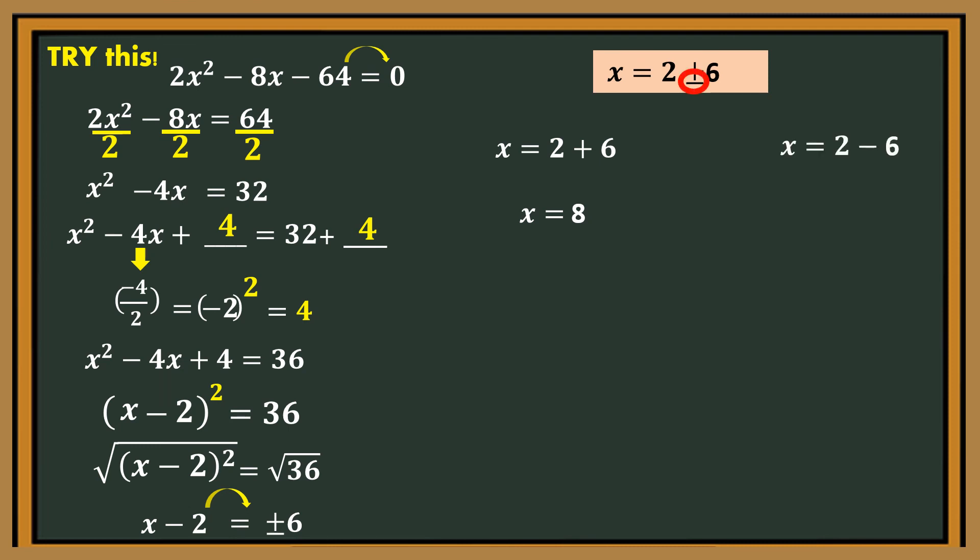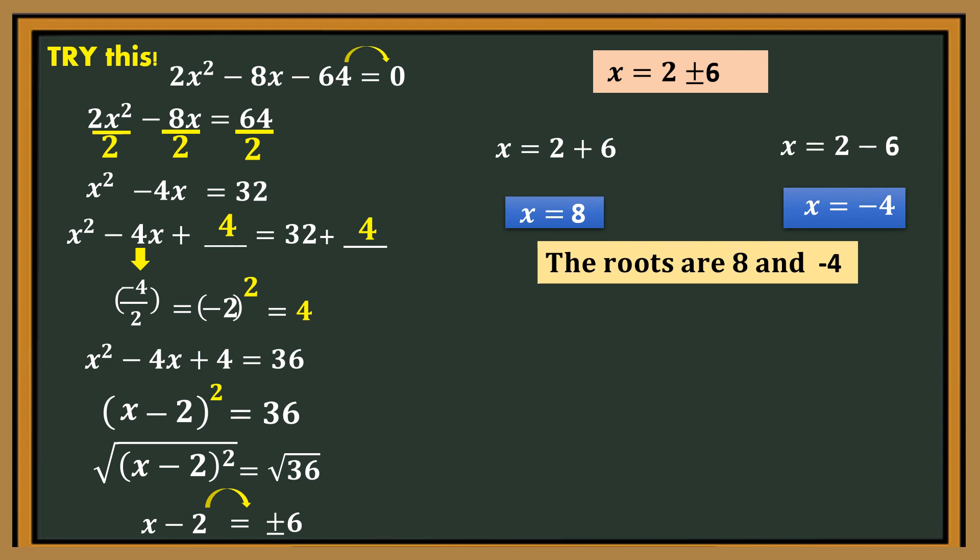Second equation: x is equal to 2 minus 6, so x is equal to negative 4. What are the roots or solutions? The roots or solutions are 8 and negative 4.